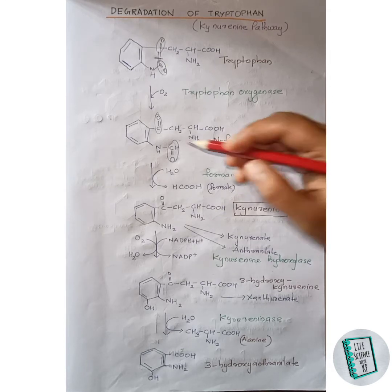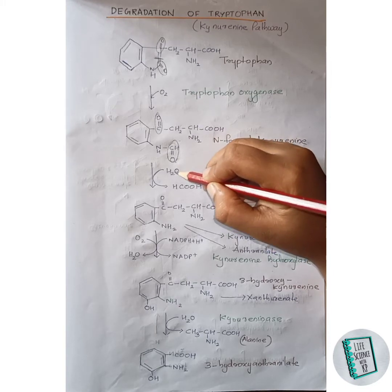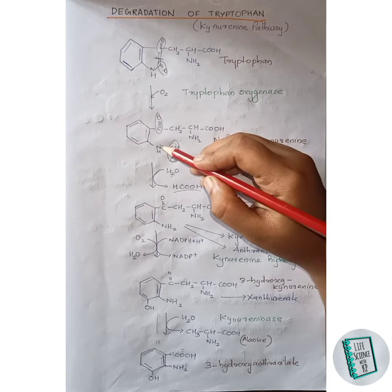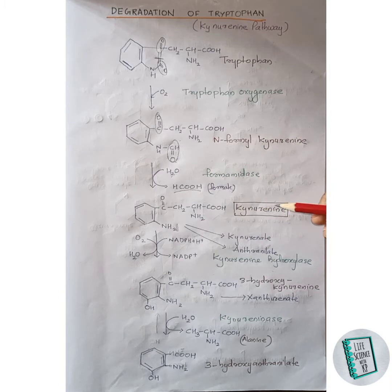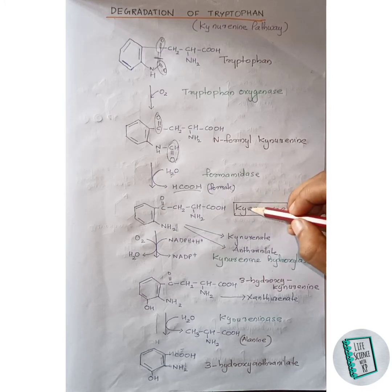N-formylkynurenine then in the presence of formamidase enzyme gets converted to kynurenine. Here formate is released — the CHO group along with an OH group of the water molecule gets released as formate. The remaining hydrogen of the water molecule attaches with this nitrogen to form NH2. Thus kynurenine is formed. Kynurenine can give rise to kynurenate and other products through other pathways.